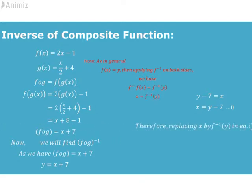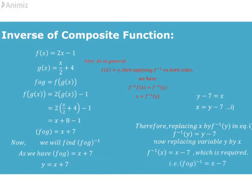Therefore, replacing x by f inverse of y in equation 1, now replacing variable y by x, we get f inverse of x equals x minus 7, which is inverse of the composite function.